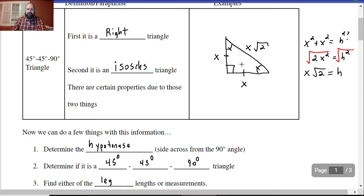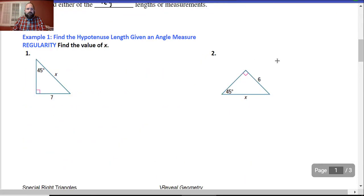Alright, let's go on. So, find the hypotenuse length given an angle measure. Alright, well, we understand there's 45 degree angles, so we understand that this has to be 45 degree angles, and this is 7 right there. I know that x will equal 7 times radical 2. That's it.